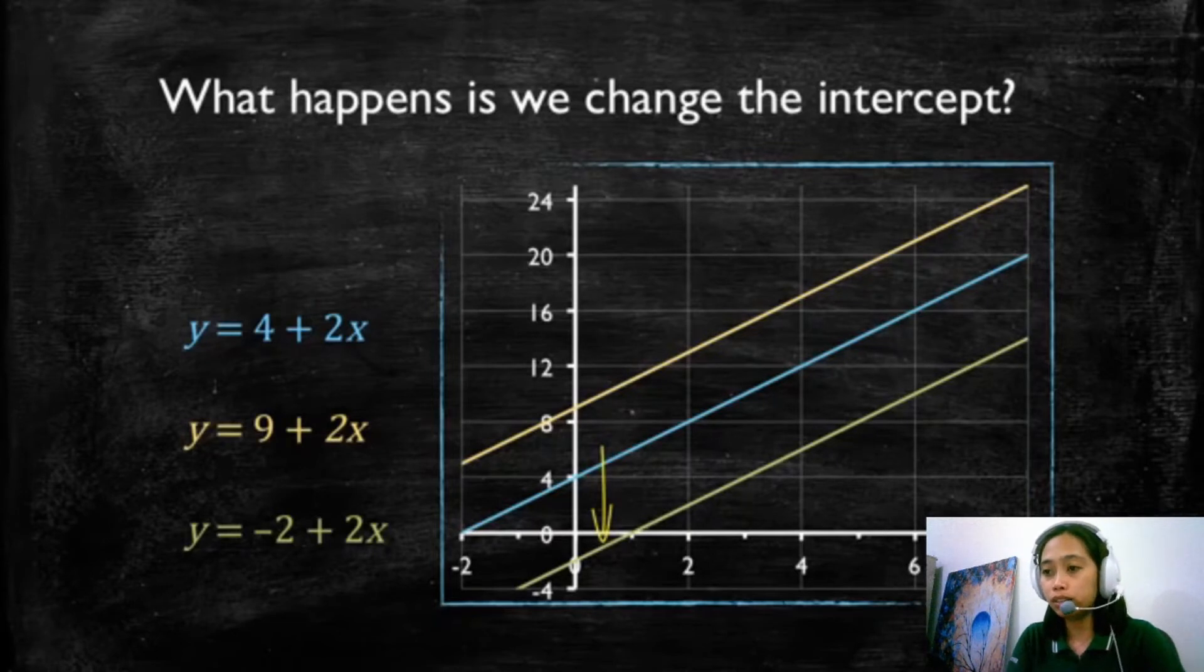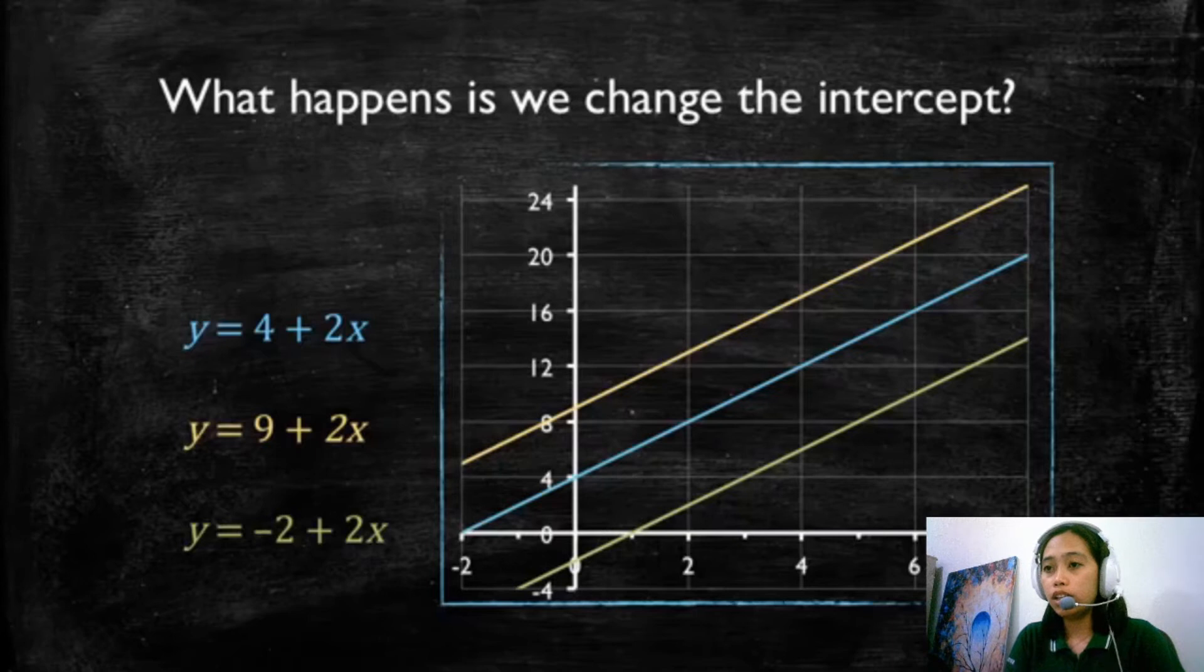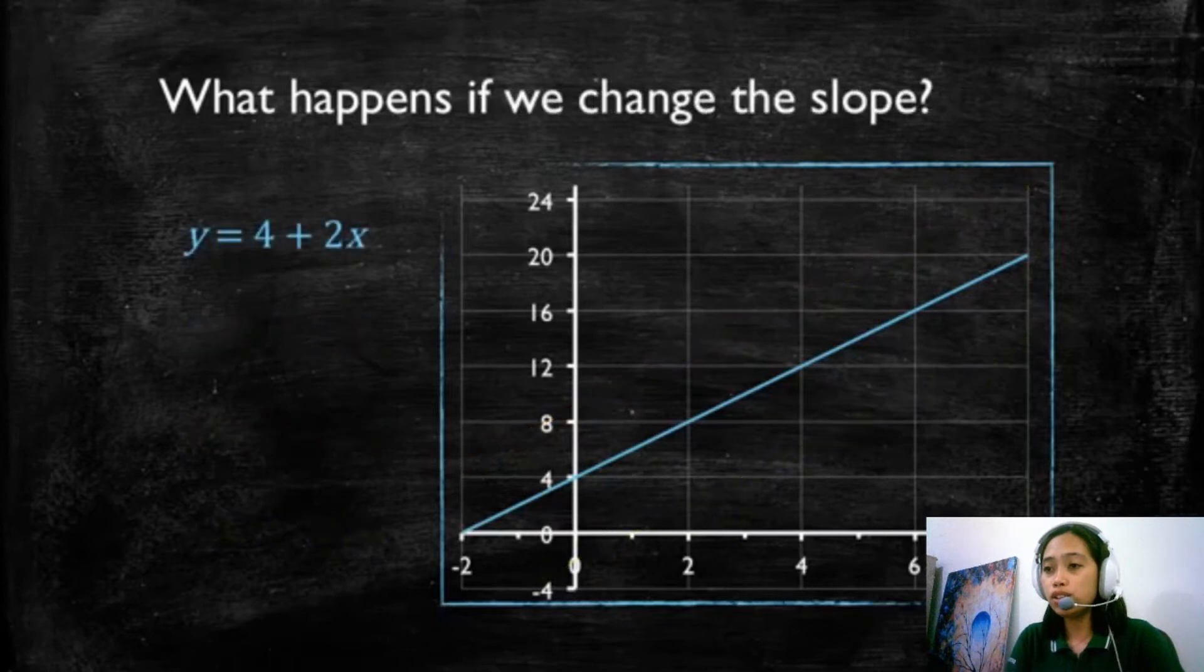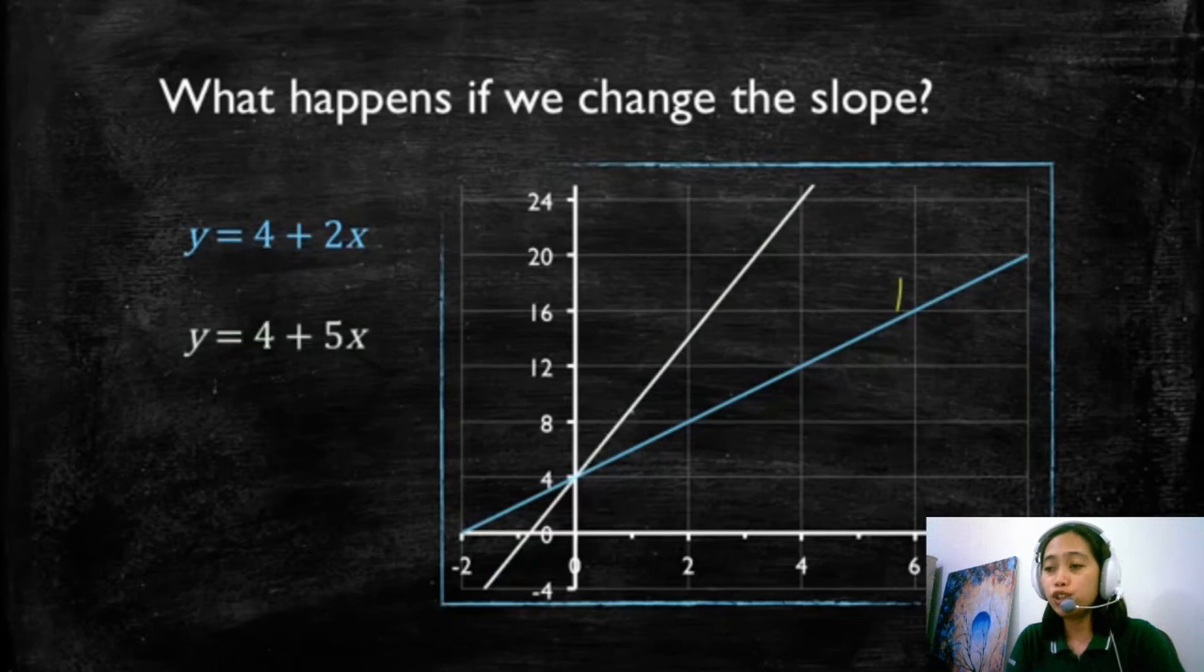So now, what happens if we change the slope? If we change the slope, we're changing the sensitivity of Y on values of X, meaning how fast or how slow Y would change when a unit of X is changed. If the slope were 5, that means for every unit of X, Y is going to increase 5 times. So you see that we have a much steeper slope because Y is growing much faster than it was before when we had a 2.